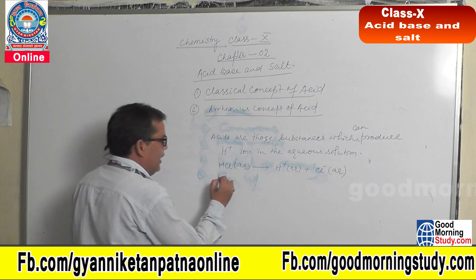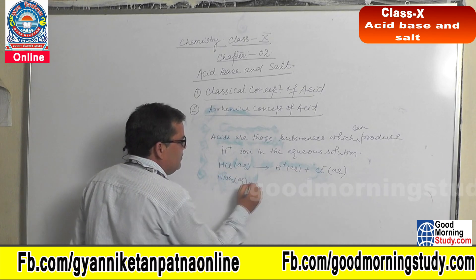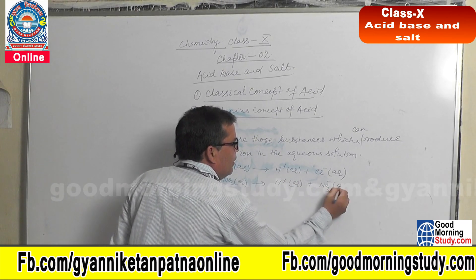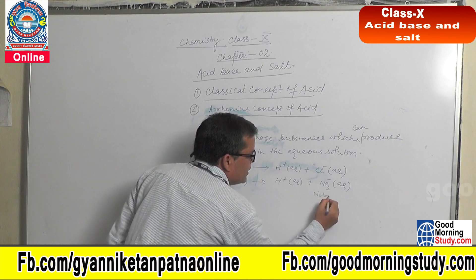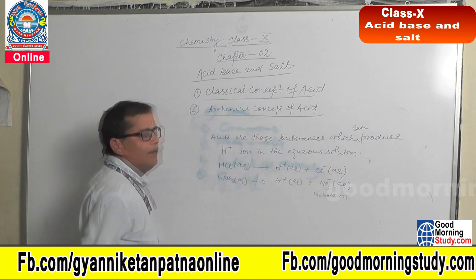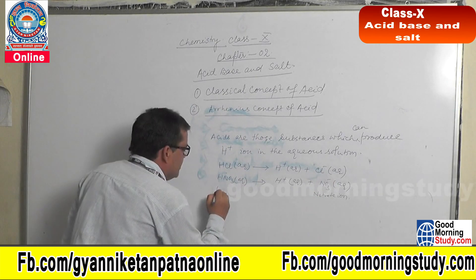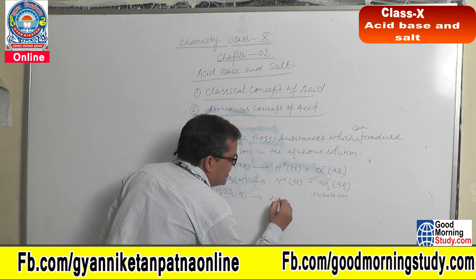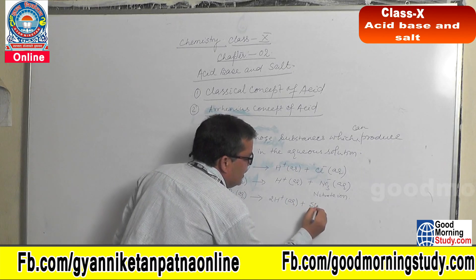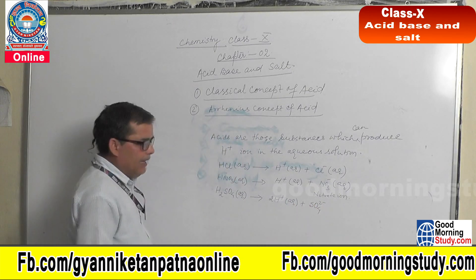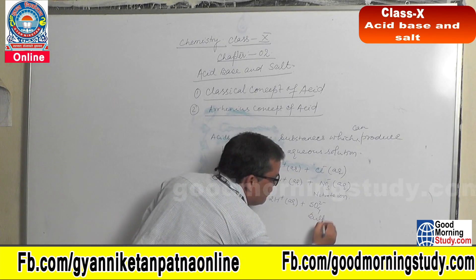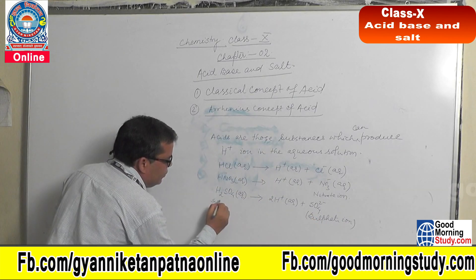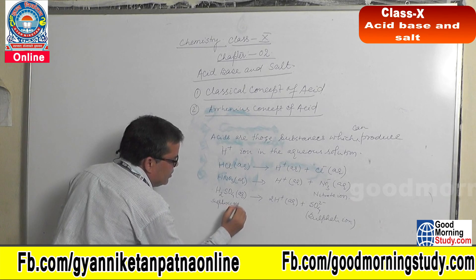In aqueous solution, hydrogen fluoride will produce H+ ions. Similarly, HNO3 will produce H+ and NO3- ion — NO3 means nitrate ion. In the case of H2SO4, what will form? 2H+ plus SO4 2- — SO4 2- is called sulfate ion. And H2SO4 is sulfuric acid.